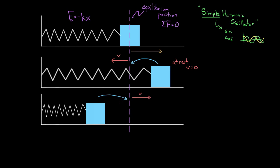Knowing this story lets you say some important things about the oscillation. At the endpoints — the points of maximum compression or extension — the speed is zero, so the mass is moving slowest. That's where the spring has stopped the mass and started bringing it back in the other direction. Whereas at the equilibrium position in the middle, you get the most speed — the mass is moving fastest when the spring brings it back to equilibrium.